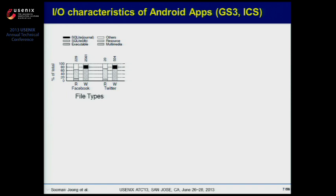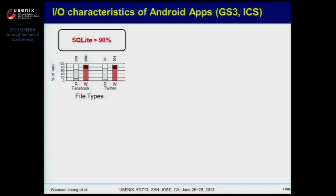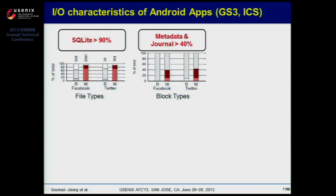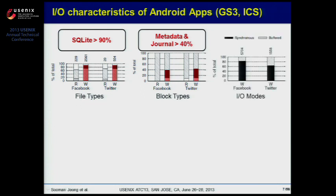Let's look at the results. First, regarding file types, we found that SQLite database and SQLite journal files account for 90% of total write requests. Next, on block types, we classified logical blocks in the file system level into three categories: data, metadata, and file system journal. We found that metadata and EXT4 journal blocks account for 40% of total write requests. Out of total write requests, synchronous writes are 70% and buffered writes are only 30%.